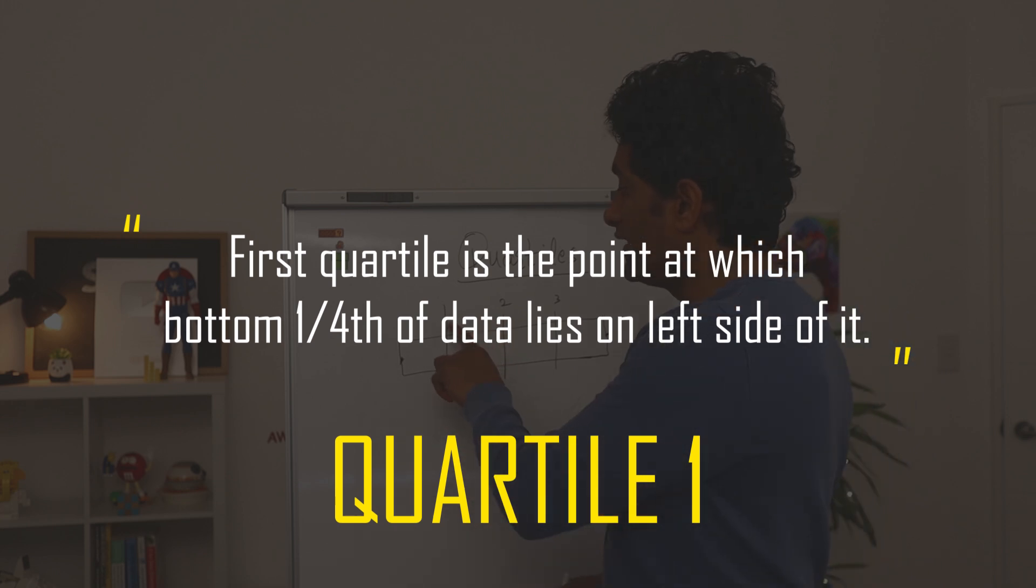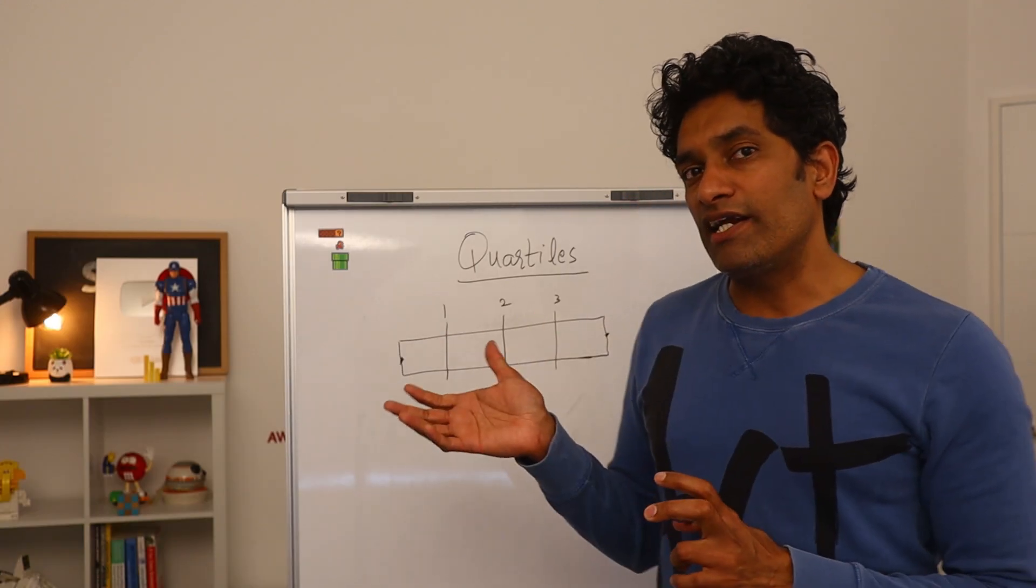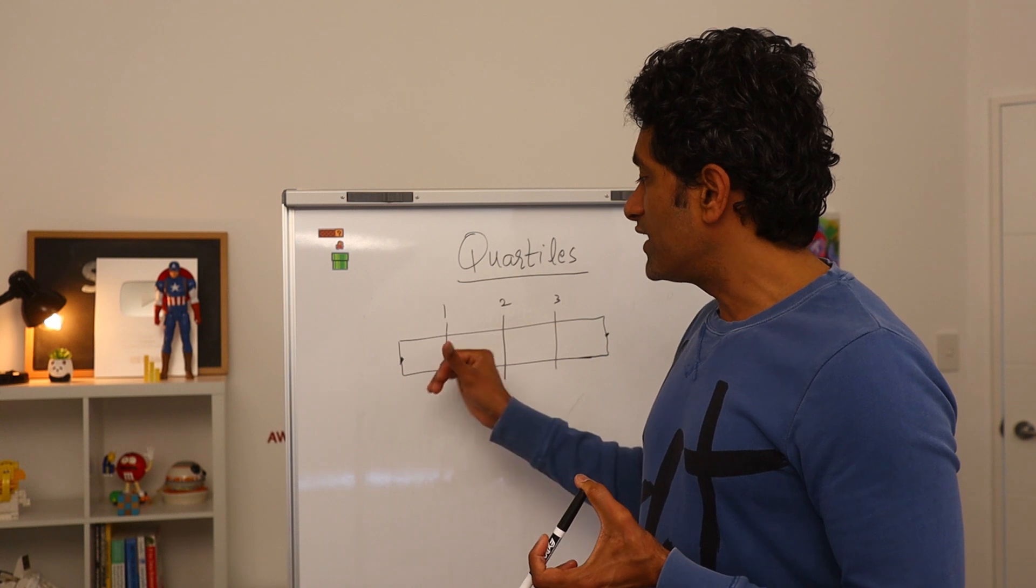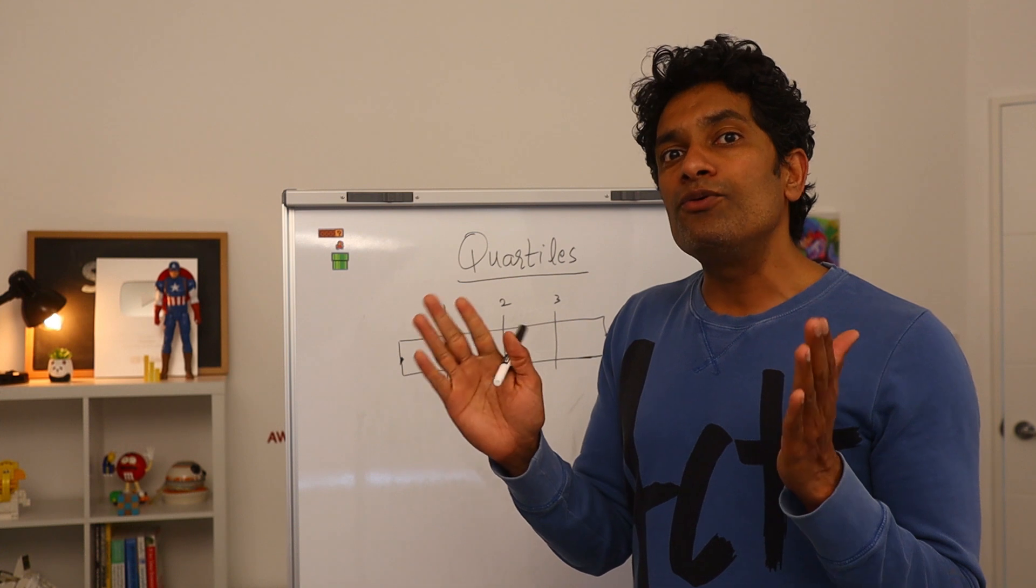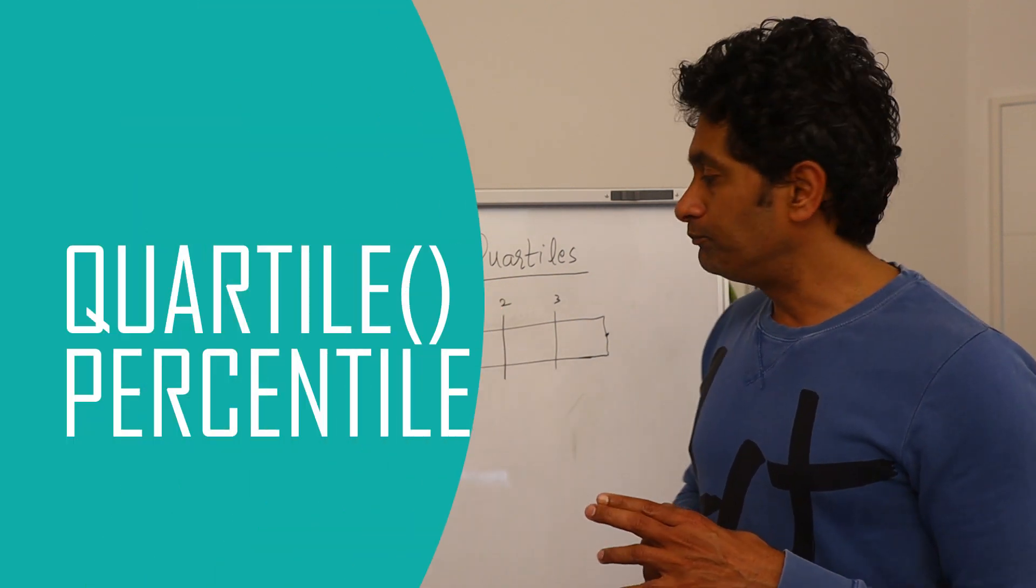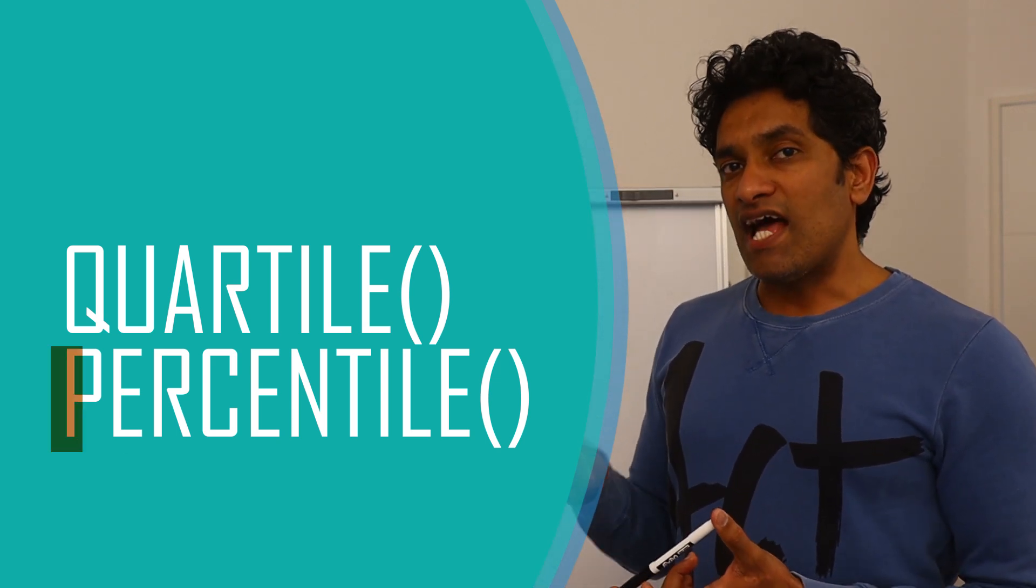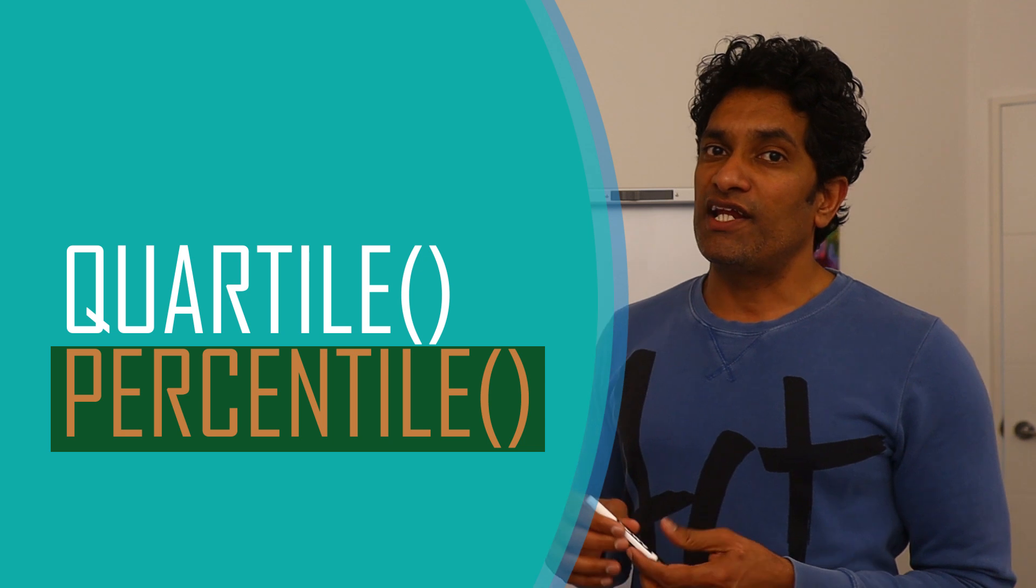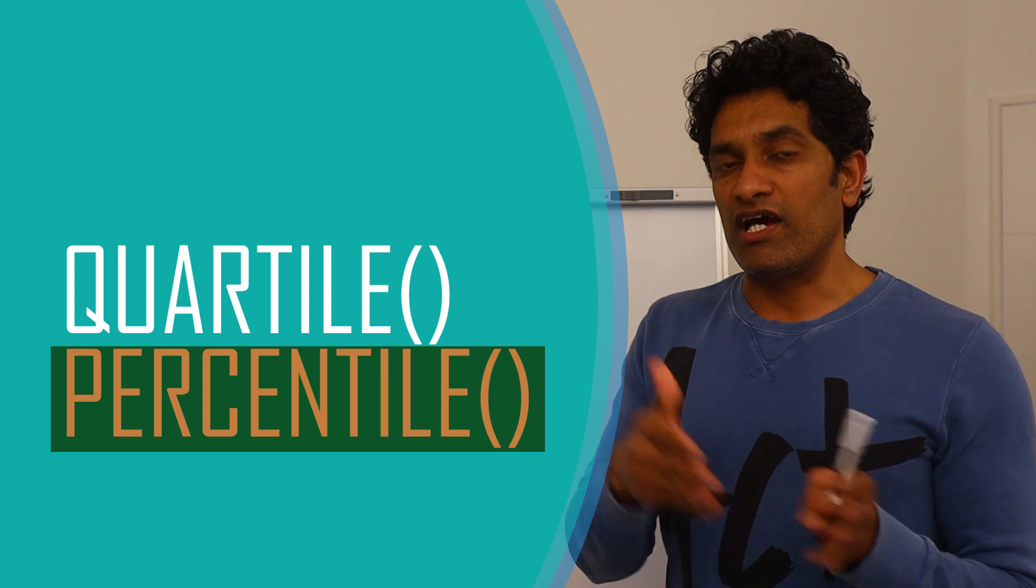The first quartile tells us the data point at which the bottom one-fourth of the values lie on this side and the top three-fourth values lie on that side. So many times when you're calculating median or average, it's a good idea to calculate where the first quartile and the third quartile are because that can tell you a better story about your data. And we can use the quartile functions in Excel to calculate these things as well as there is a percentile function in Excel that can be used to calculate any percent of values, not just 25 or 75.